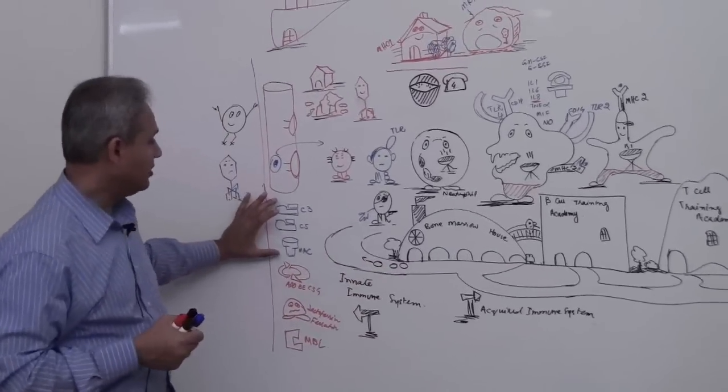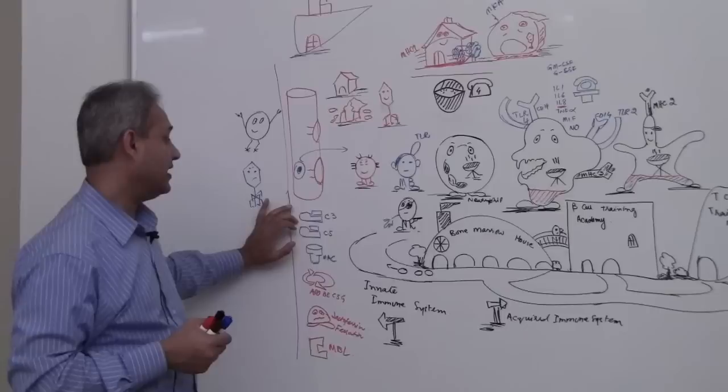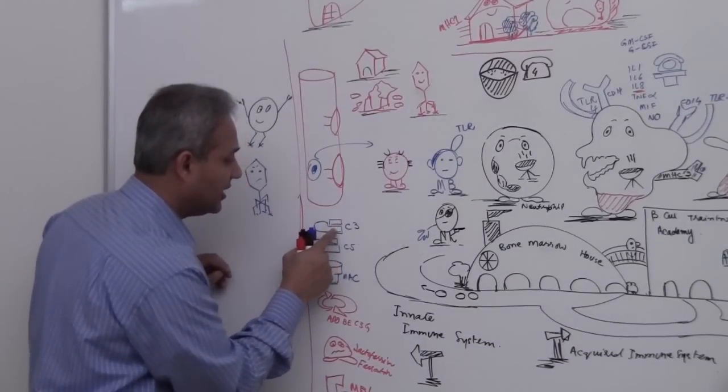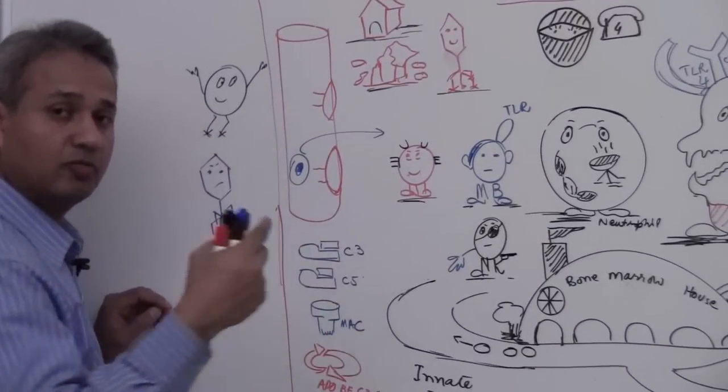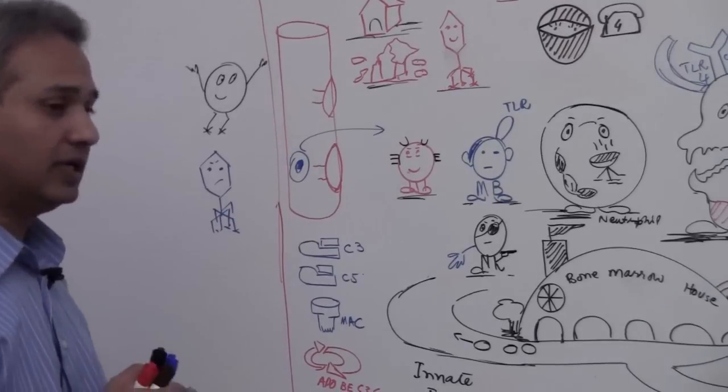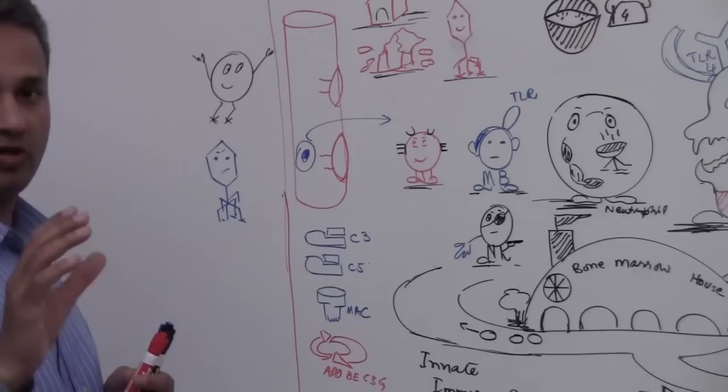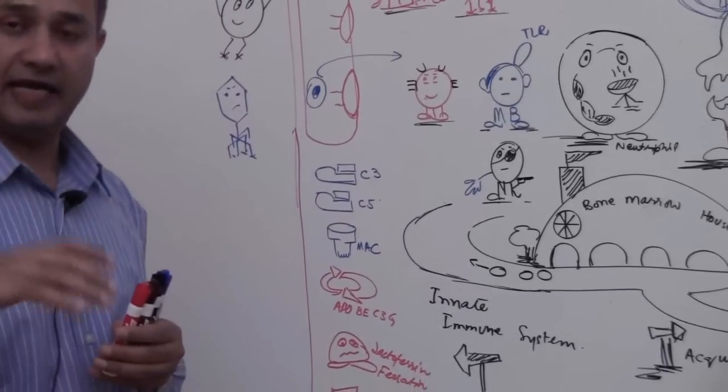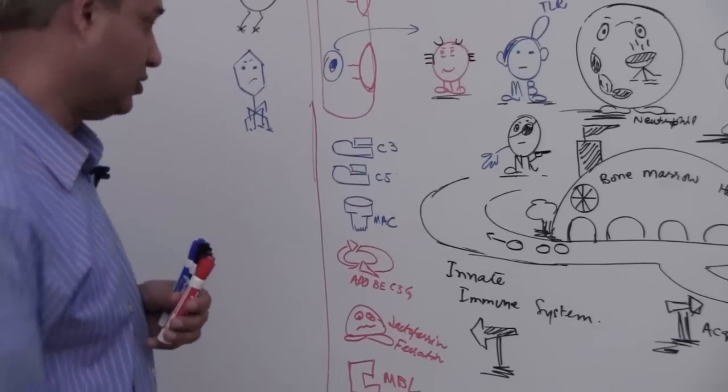So it makes complement system. So C3A and C3B. So if you see there are two components here. So one is A and the other one is B. C3A is called anaphylatoxin. C5A is also called anaphylatoxin. They are chemotactic as well.